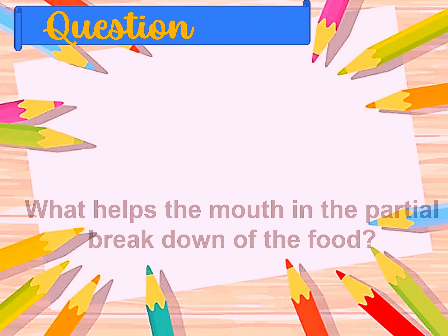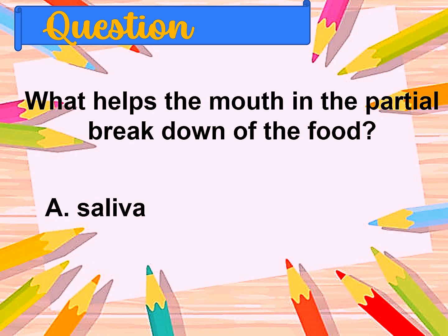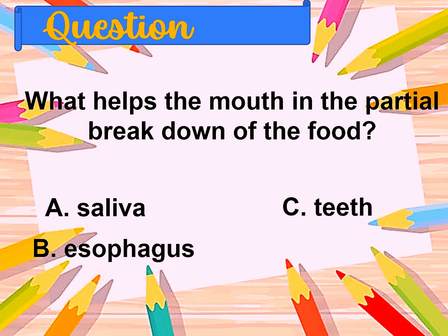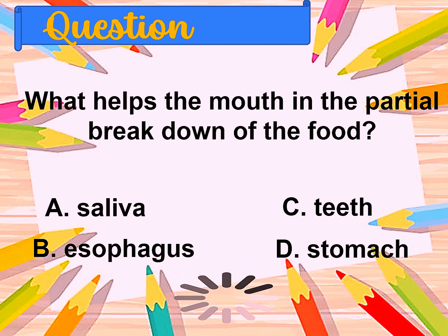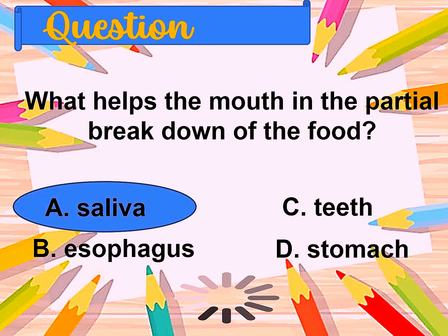Question number ten: What helps the mouth in the partial breakdown of food? A. Saliva, B. Esophagus, C. Teeth, D. Stomach. The correct answer is saliva.